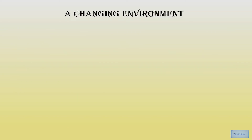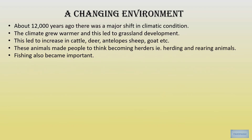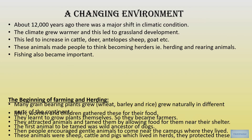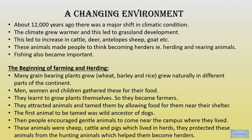About 12,000 years ago there was a major shift in climatic conditions — the climate grew warmer. Grasslands developed, leading to an increase in cattle, deer, antelopes, sheep and goats. These animals made people think of becoming herders — herding and rearing animals. Fishing also became very important. This is the context in which farming and herding began.